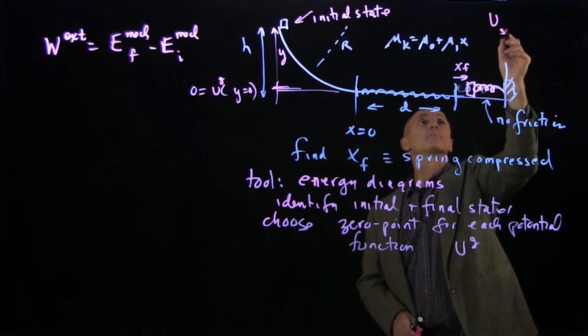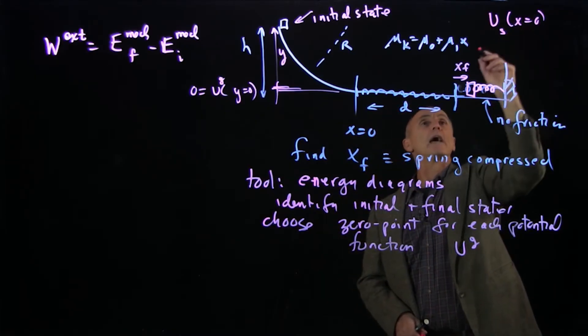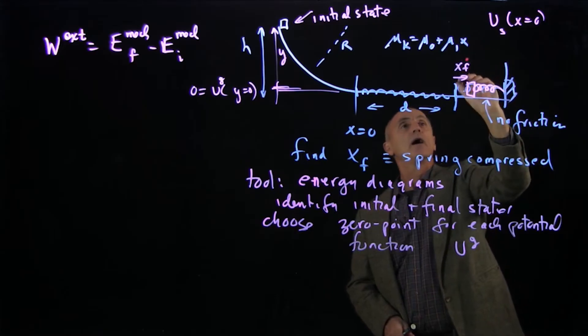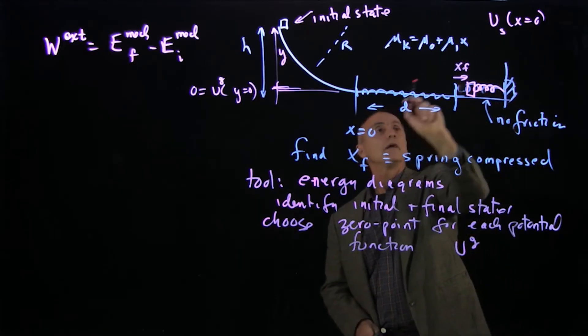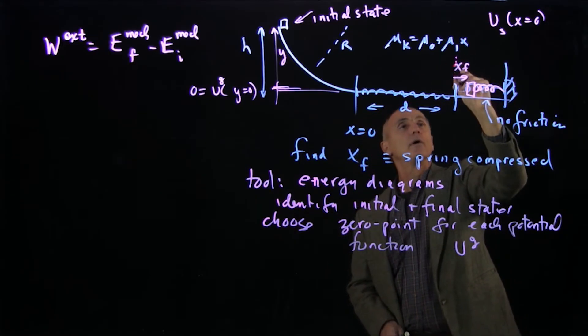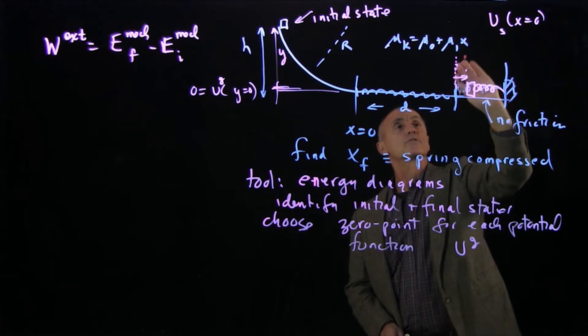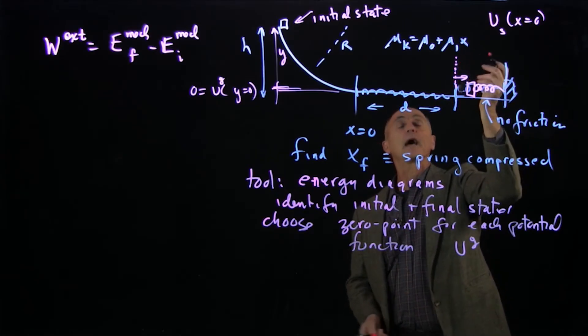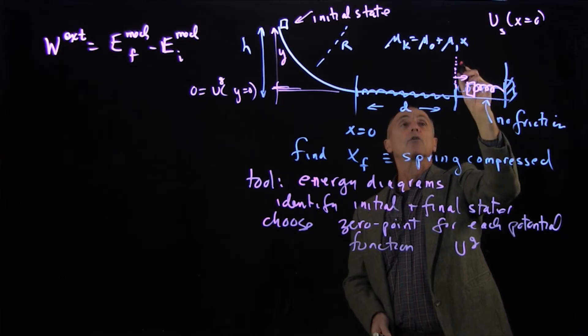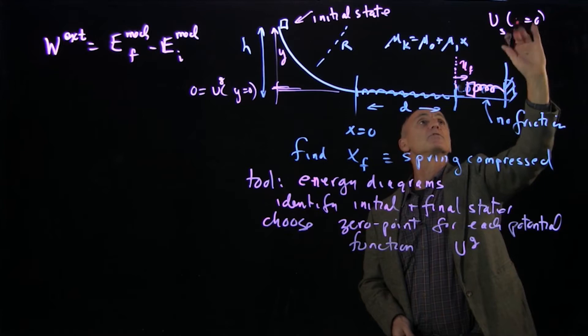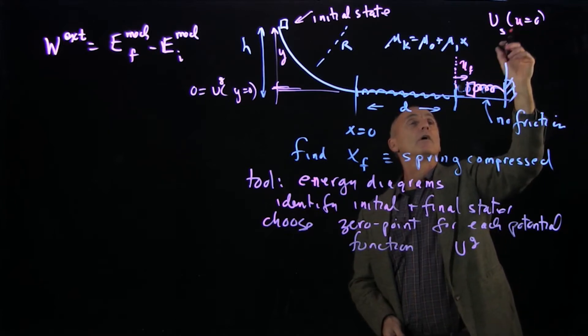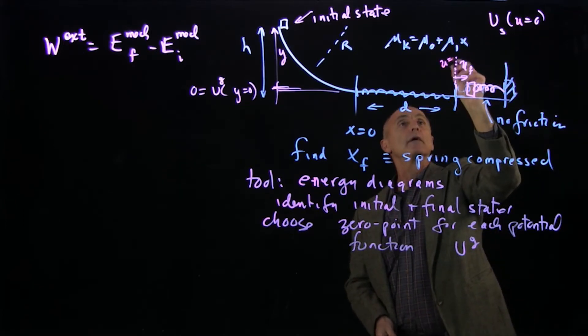And the zero point for the spring is when this x. Now I'm going to call here x equals 0. So let's call this a variable. I can call it anything I want. I'll call it u final.